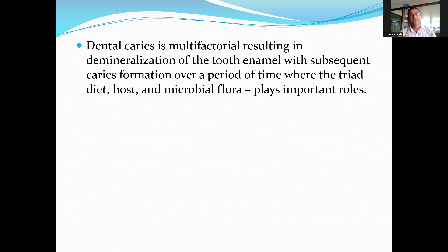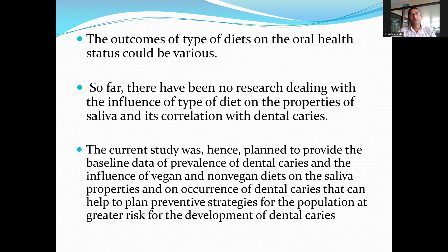Dental caries is a multifactorial disease resulting from the demineralization of tooth enamel with subsequent caries formation over time, involving the triad of diet, host, and microbiome. The outcomes for the type of diet on oral health status could be various. So far, there has been no research dealing with the influence of type of diet on the properties of saliva and its correlation with dental caries. Hence, the current study was done to provide baseline data for the prevalence of dental caries, the influence of vegetarian and non-vegetarian diets on saliva properties, and to help plan preventive strategies for the population at greater risk.